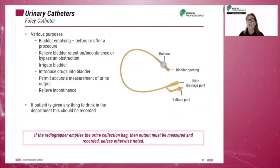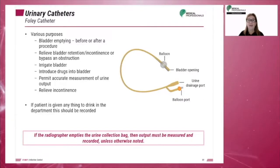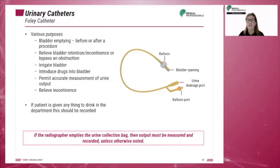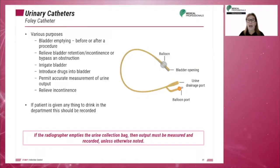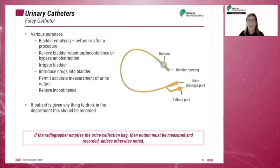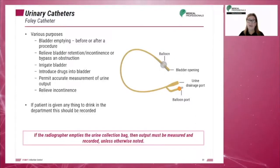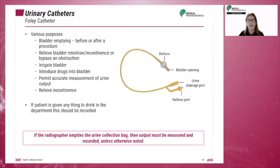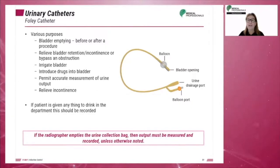The Foley catheter can be used for various purposes, such as bladder emptying before or after a procedure, relieving bladder retention or incontinence, bypassing an obstruction, irrigating the bladder, to introduce drugs into the bladder, to permit accurate measurement of urine output, and to relieve incontinence.